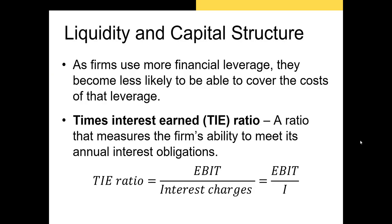Now that we've discussed how to measure leverage, let's introduce our last formula. As firms use more financial leverage, they become less likely to be able to cover the costs of that leverage. There is a specific ratio that allows us to determine how many times over a firm can cover its interest expenses on its debt — that ratio is called the times interest earned, or TIE ratio. We simply take the EBIT of our firm and divide it by the interest expenses. We don't want a TIE ratio that's too low — usually below about 4 is concerning — but a ratio of 15 to 20 indicates the firm could issue new debt and lever up. The happy medium is usually TIE ratios between about 7 to 12.